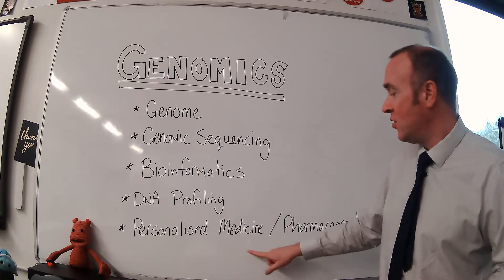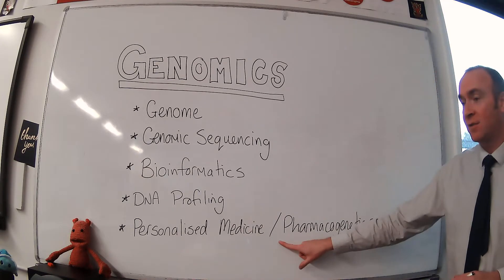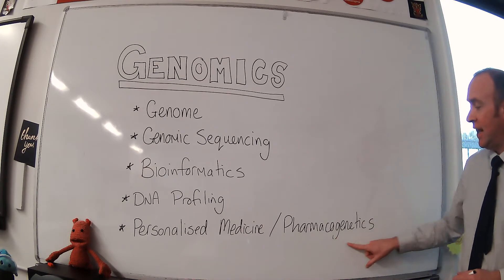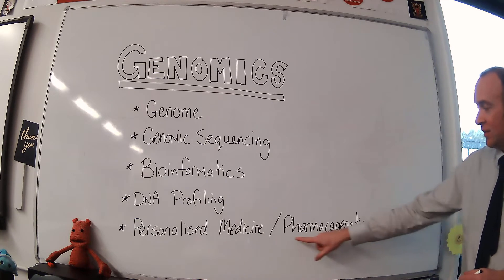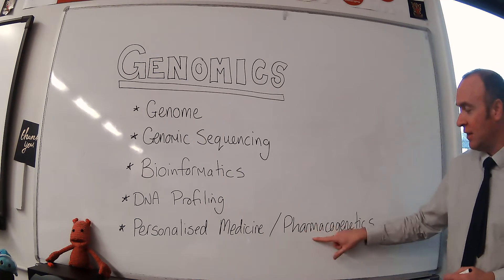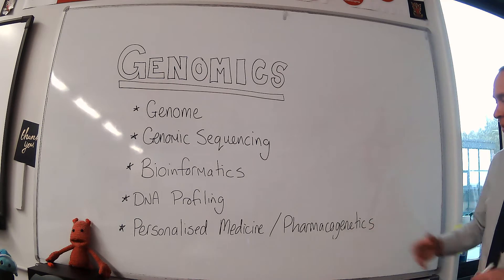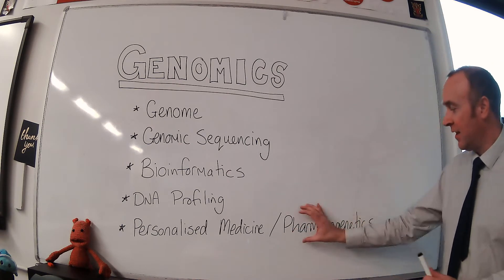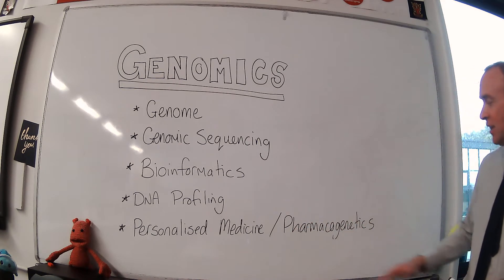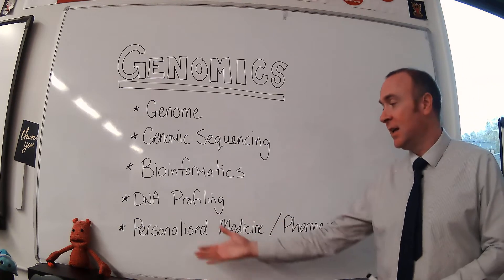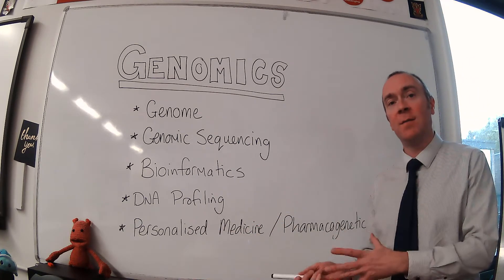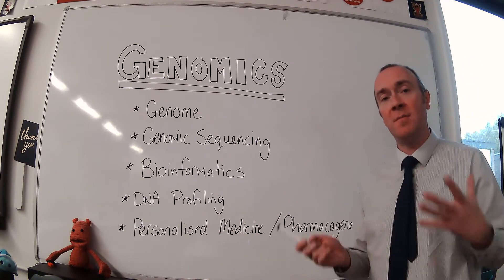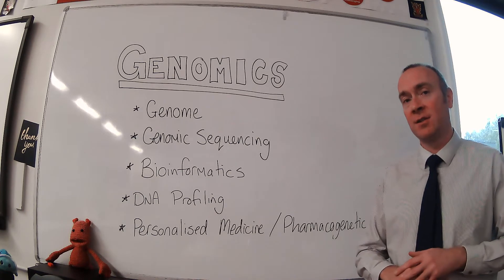Another word we might use is pharmacogenetics. Pharma meaning the drug industry, genetics obviously being to do with their genome — push the two together and you get pharmacogenetics, which more or less means the same thing as personalised medicine: using genetic information to work out what the best drug treatment for an individual is.